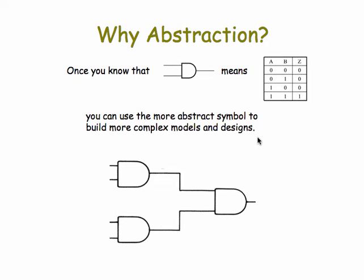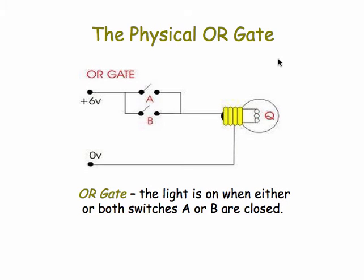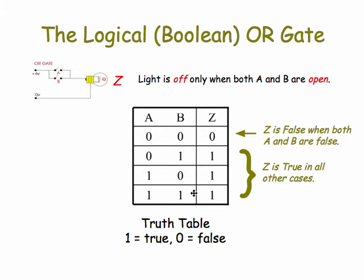The OR gate is another fundamental computational component. The OR gate, the light goes on when either switch is on or when both are on. And we can define that by defining a truth table.